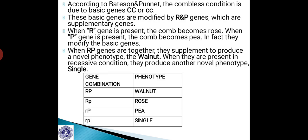When the P gene is present, the comb becomes Pea — and in fact they modify the basic genes. When R and P genes are together in dominant condition, they supplement to produce a novel phenotype: the Walnut. And when they are present in recessive condition, they also produce another novel phenotype: single. The following tabular column shows the details of the comb pattern inheritance: capital RP (both dominant) produces Walnut; capital R small p produces Rose comb; small r capital P produces Pea; and small r small p produces single comb variety.